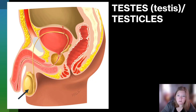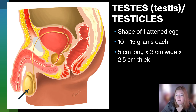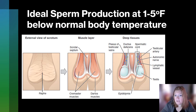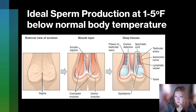The testes — or testicles — have the shape of a flattened egg, about 10 to 15 grams mass each. Their dimensions are about five centimeters long, three centimeters wide, and about 2.5 centimeters thick. Their primary job is to produce sperm and to produce hormones. The ideal sperm production temperature is roughly 1 to 5 degrees below normal body temperature, which is why the testes are on the outside of the body. If the testicles get too cold, muscles pull them up closer to the body; if they are too warm, those muscles relax and the scrotum hangs lower away from the body to keep sperm most viable.